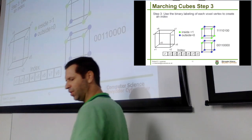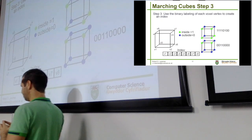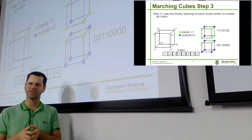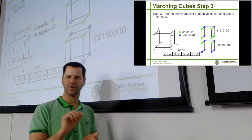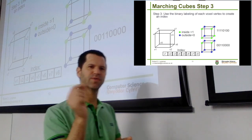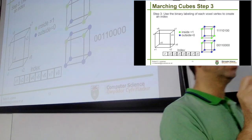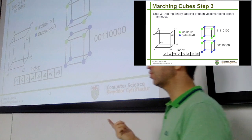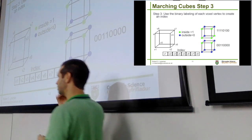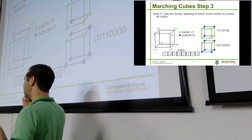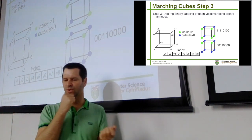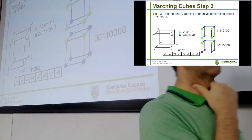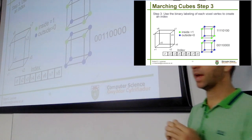We use that information — those eight tests, one per corner of the cube — which yield true or false in every case: is this above our isovalue? True or false. And we use that to build a unique index.